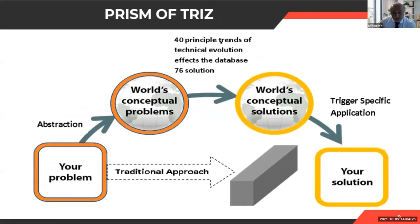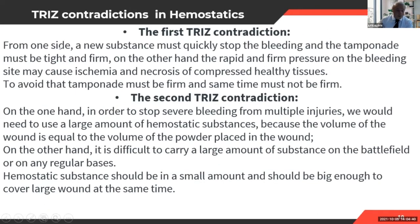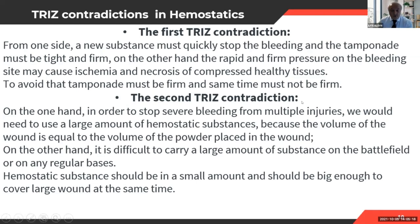Using the prism of TRIZ, we identified the problems and found solutions. The first contradiction: a new substance must quickly stop bleeding and the tamponade must be tight and firm enough to stop the bleed — but on the other hand, rapid pressure on the bleeding side may cause ischemia and narrowing of vessels, damaging surrounding tissue. So the tamponade must be firm yet at the same time not too firm.